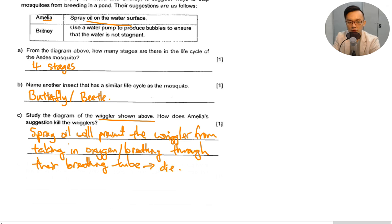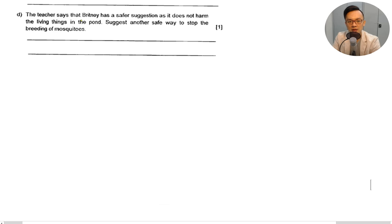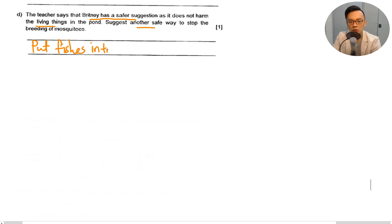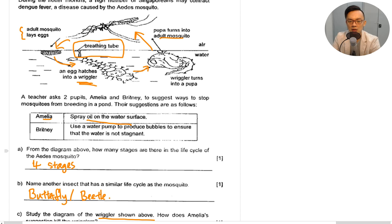Because living things need air, food, and water. The teacher says Brittany has a safer suggestion as it does not harm other living things in the pond. Another safe way to stop the breeding of mosquitoes is to put fish into the water. The fish will eat the wrigglers and pupas as food, preventing the spread of mosquitoes.